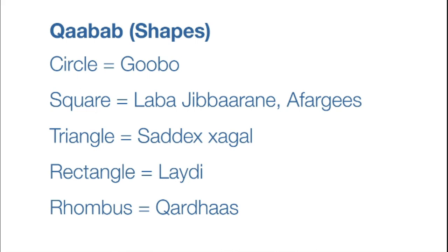Triangle is saddihagal, or you could also say saddihgas. Rectangle is lady. Rhombus is qardas.